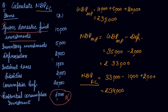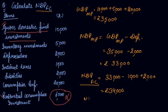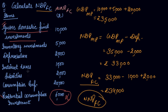If net factor income from abroad had been given, you could have found NNP at FC. Since it's not given here, if they ask for NNP at FC with no foreign income information, the answer remains the same as NDP at FC. In this way you calculate national income using the expenditure method. Please download the Scholars Learning app and enjoy the learning experience.